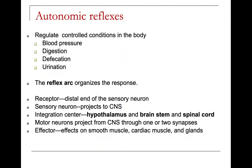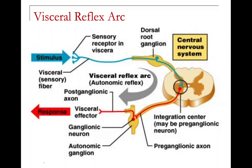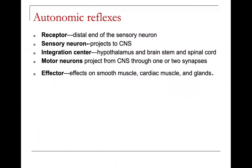Autonomic reflexes control conditions within the body, regulating blood pressure, digestion, defecation, and urination. The reflex arc includes a receptor at the distal end of the sensory neuron, which projects to the CNS integration center — the hypothalamus, brain stem, and spinal cord — which decides the response. Motor neurons project from the CNS through one or two synapses to reach the effector, which may be smooth muscle, cardiac muscle, or glands.